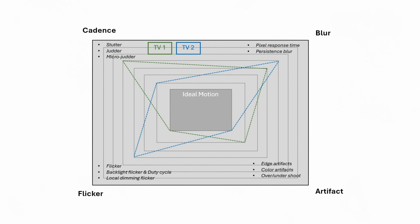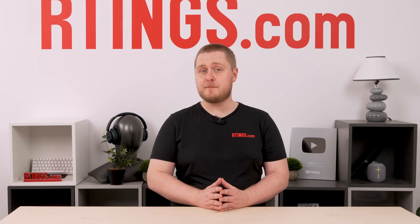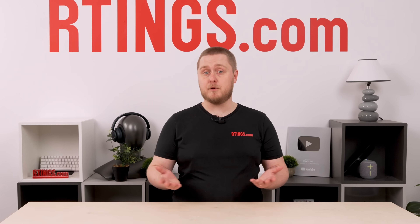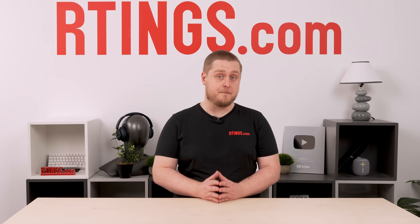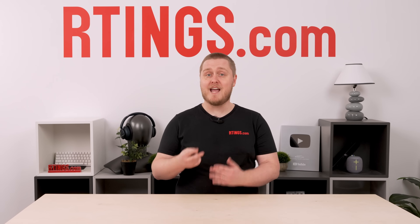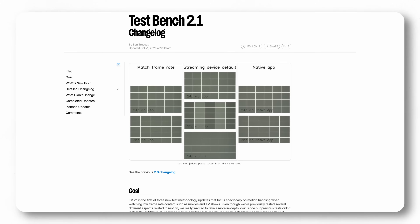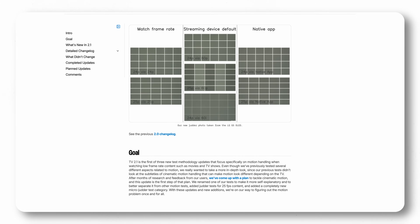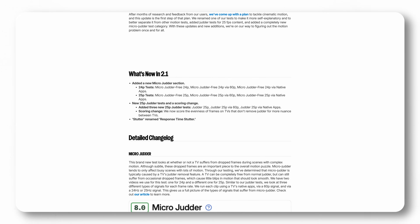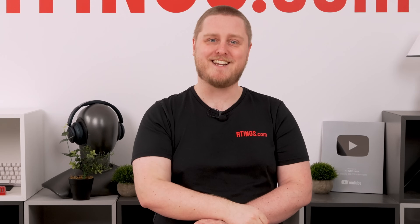As far as motion is concerned, the future is potentially as bright as the latest mini-LED TVs. We're already hard at work on TestBench 2.2, which will address motion blur. If you have any feedback about the current TestBench or what you'd like to see regarding blur, now is the time to chime in — send us your comments, questions, and suggestions. You can also read about all of the changes and our methodologies in the links below. Thanks for watching — I'm Marco from Ratings.com, where we help you find the best product for your needs.